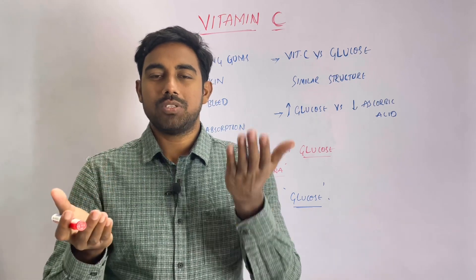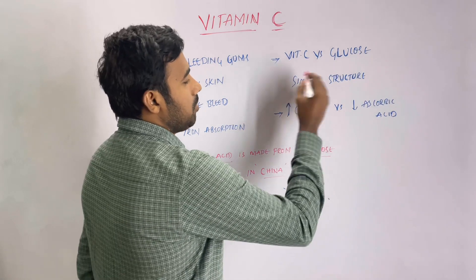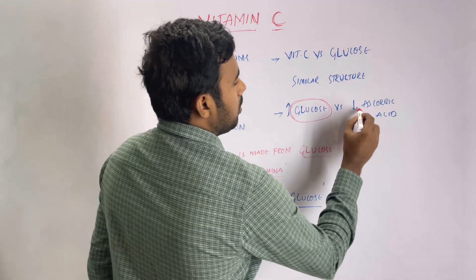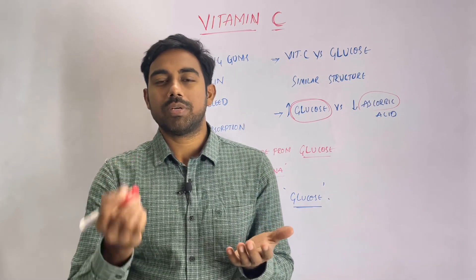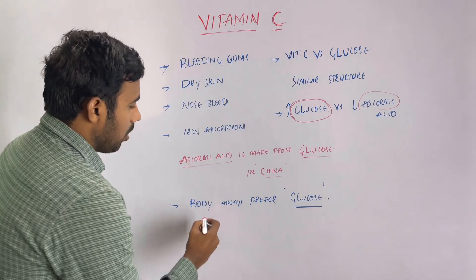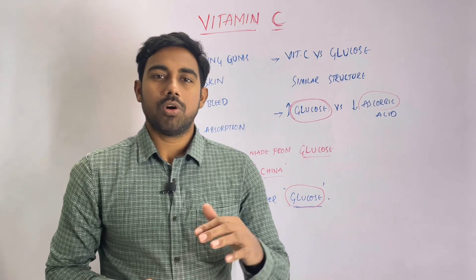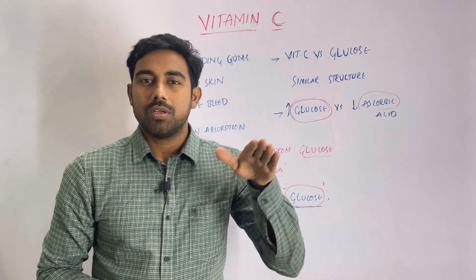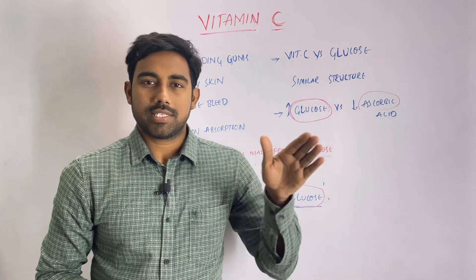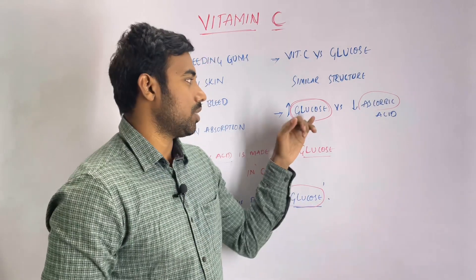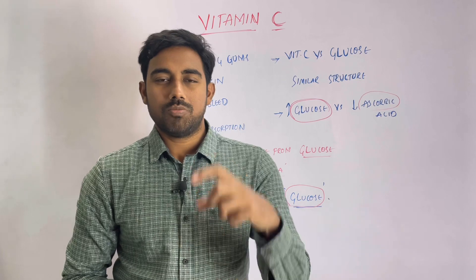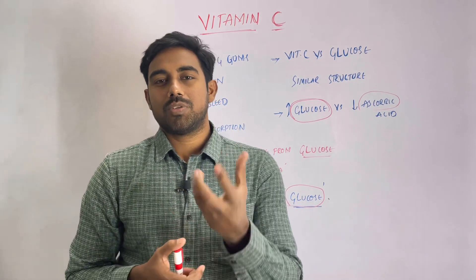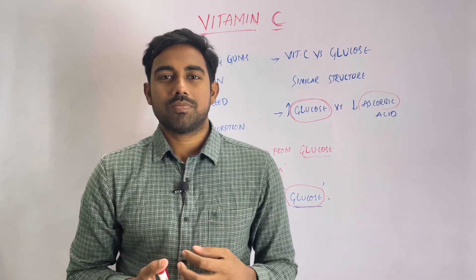So you have glucose and vitamin C, and they have similar structures in the body. If you have a high amount of glucose, your body will prefer glucose. The body always prefers glucose — it says, I want glucose. So if your body has high glucose, and you add vitamin C or ascorbic acid, the body will still prefer glucose. When glucose quantity is less, more vitamin C is absorbed. They share similar receptors, so the body takes in glucose and vitamin C through the same pathway.